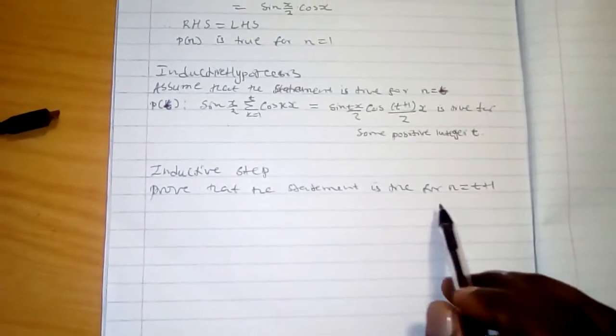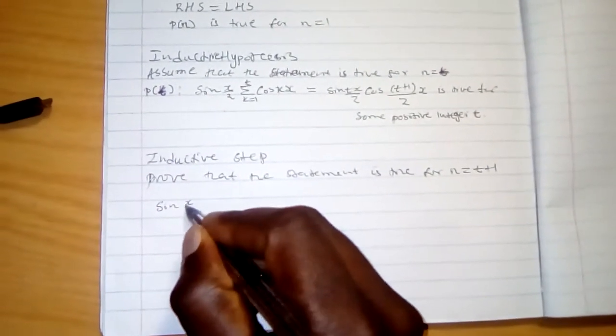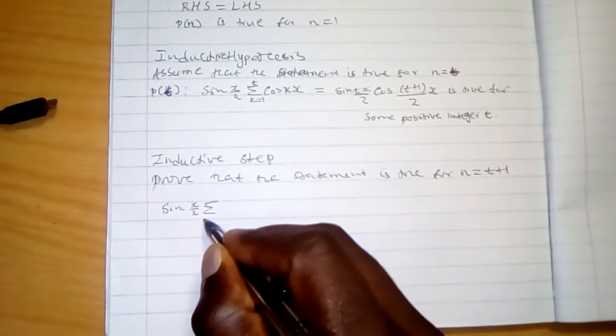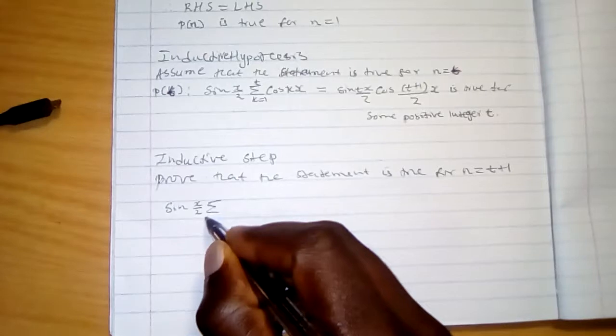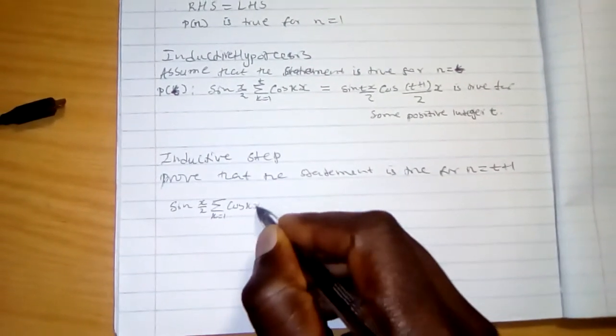We know that when n is equal to 1, then sine x over 2, the sum of k is equal to 1 cos kx.